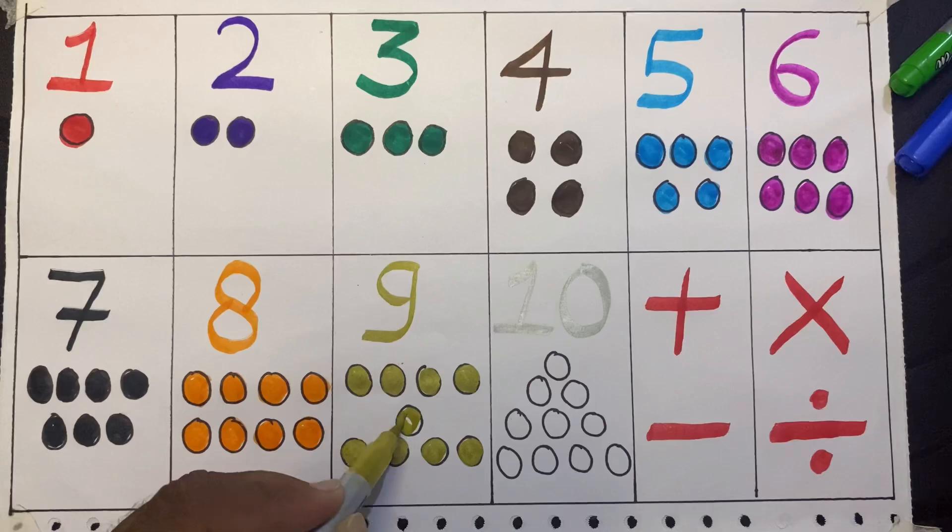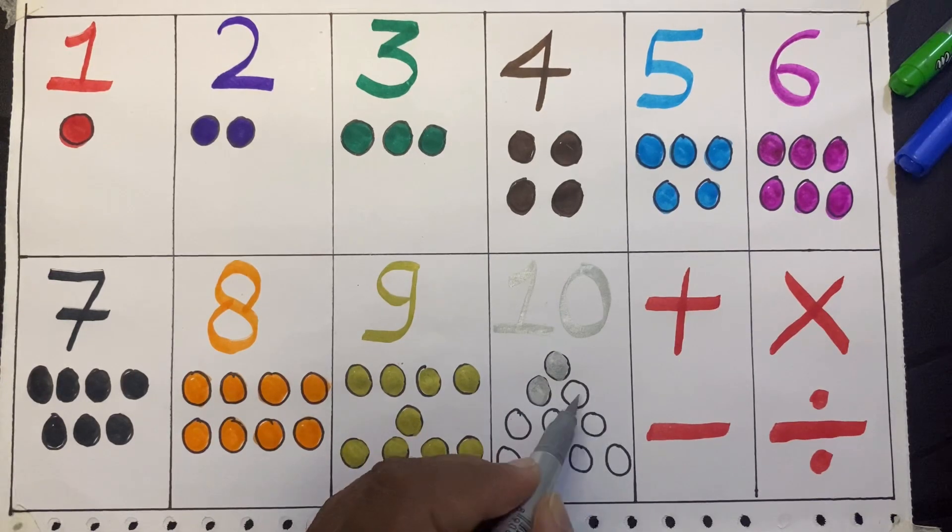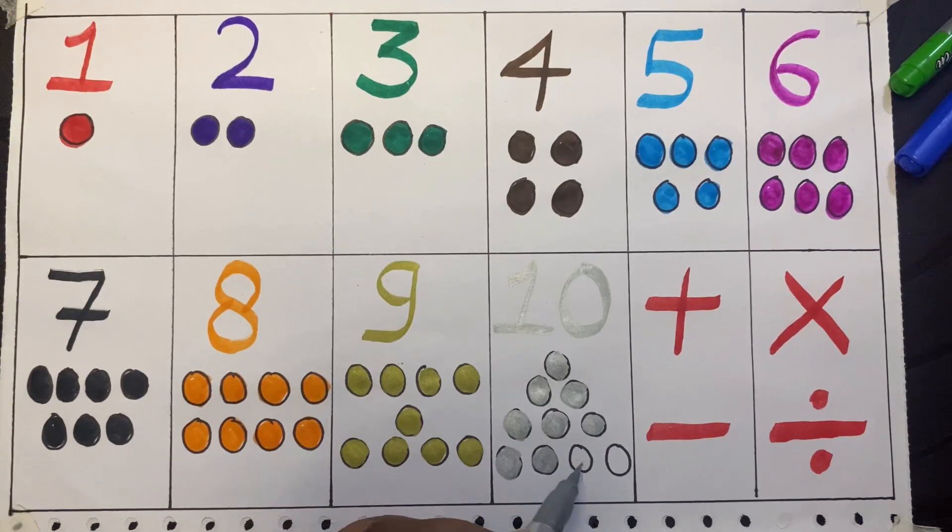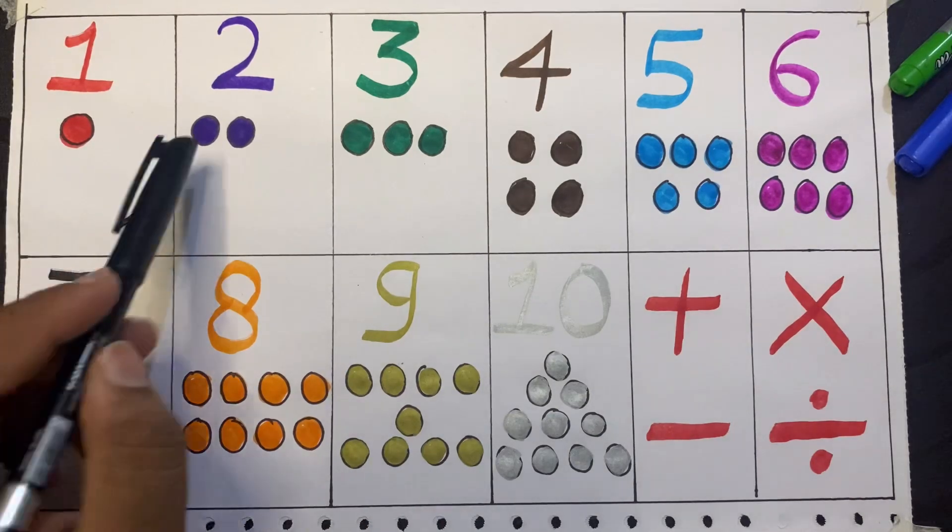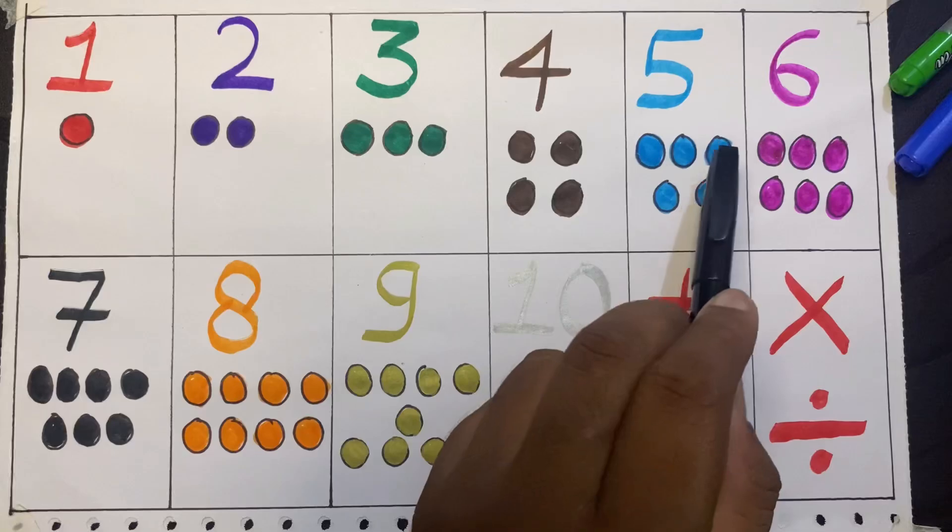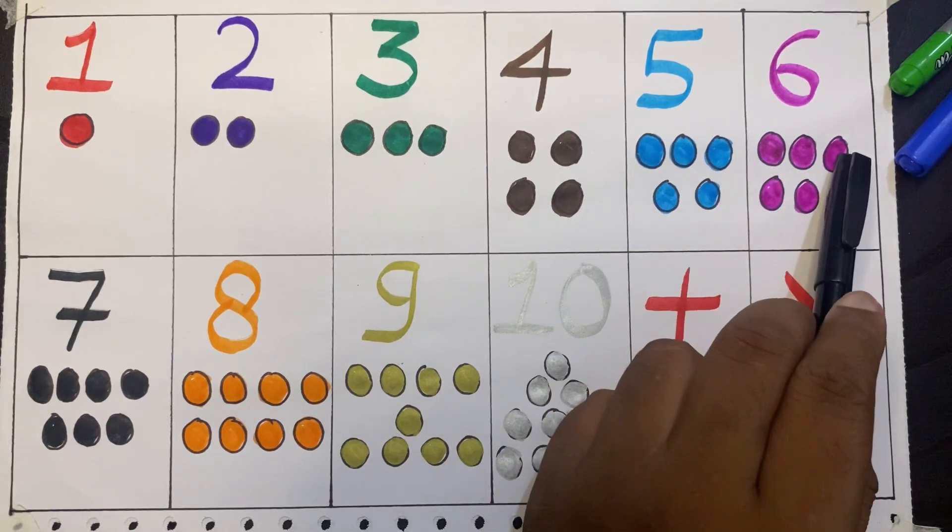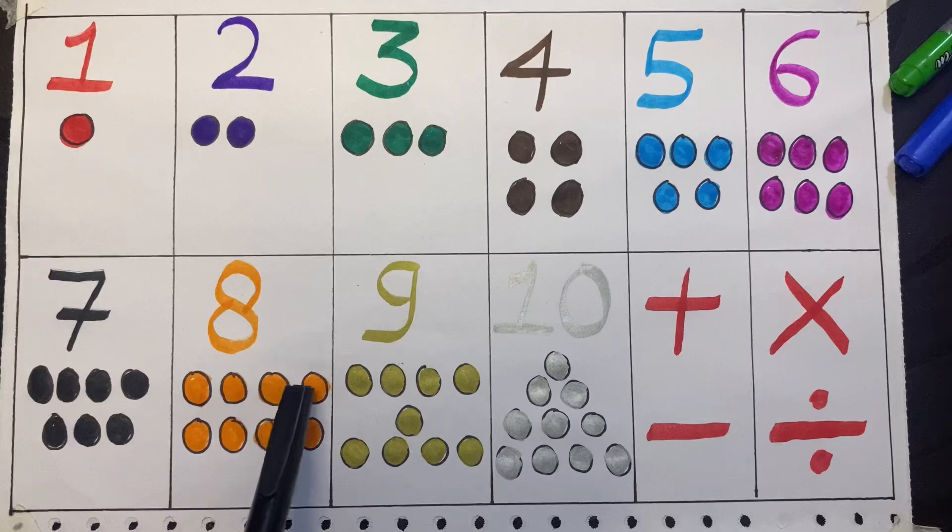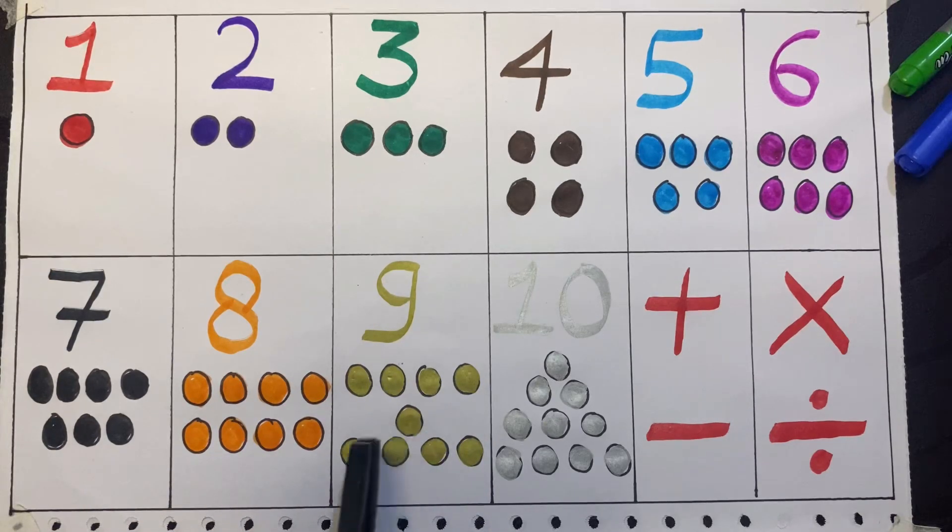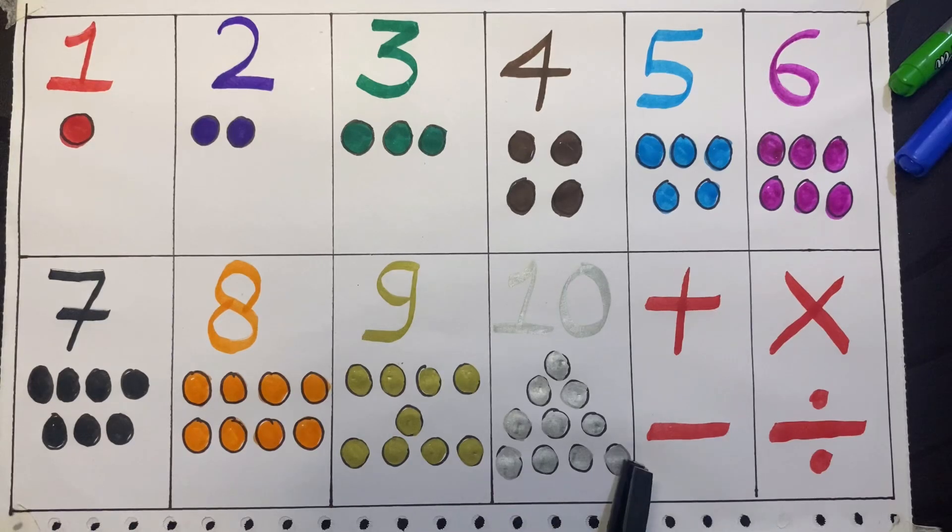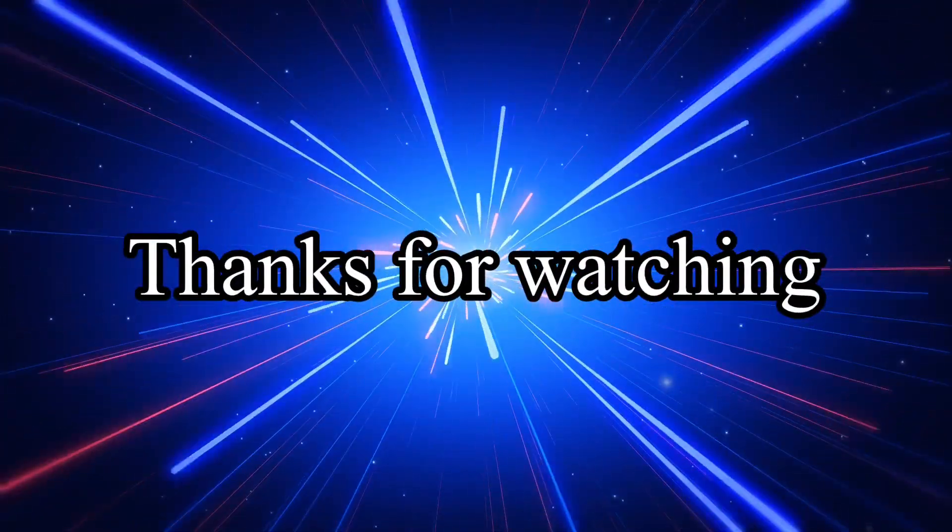1, 2, 3, 4, 5, 6, 7, 8, 9 - 9 yellow circles. 1, 2, 3, 4, 5, 6, 7, 8, 9, 10 - 10 silver circles. Thank you.